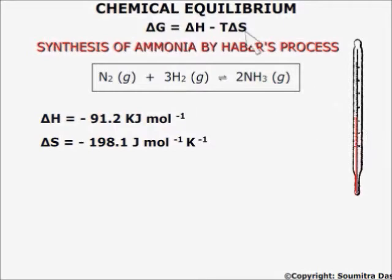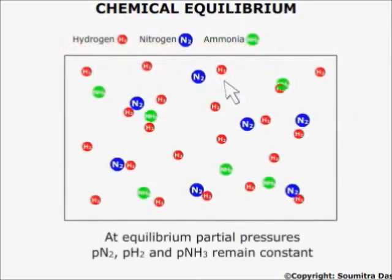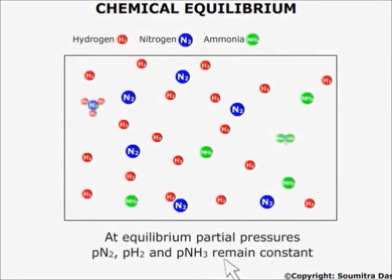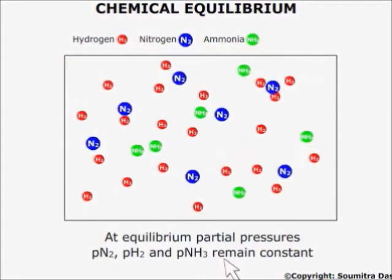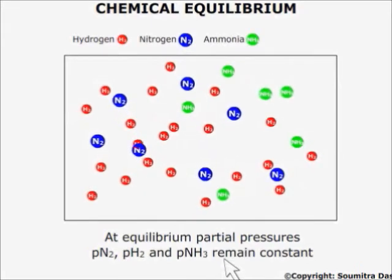this TΔS part becomes more and more positive until a temperature is reached when the free energy change becomes no longer negative. At this stage, it is said that chemical equilibrium has been reached. At this point, the partial pressure of the products and the reactants remain constant and the reaction seems to have stopped.